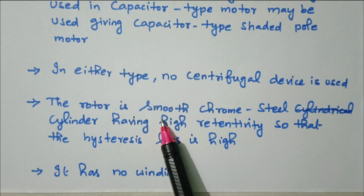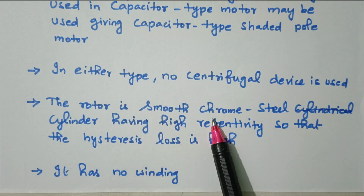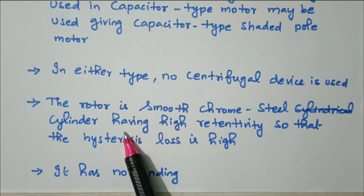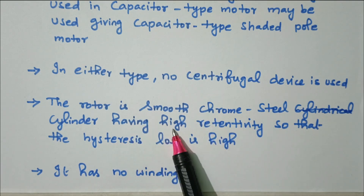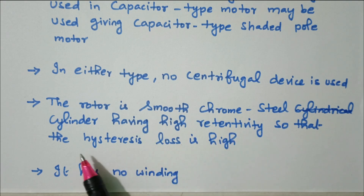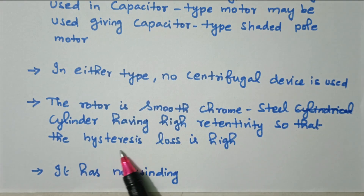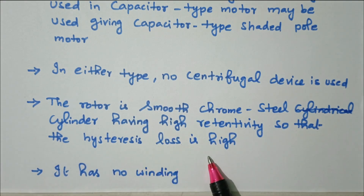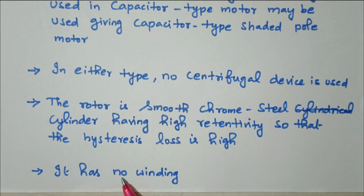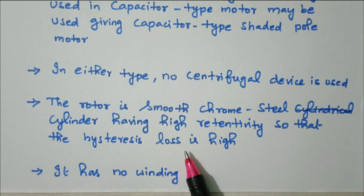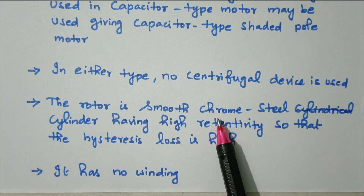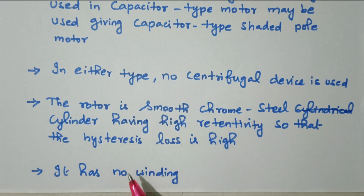The rotor is a smooth chrome steel cylinder having high retentivity, so that hysteresis loss is very high. It has no winding — only the steel cylinder is available. Now we'll see the diagram.